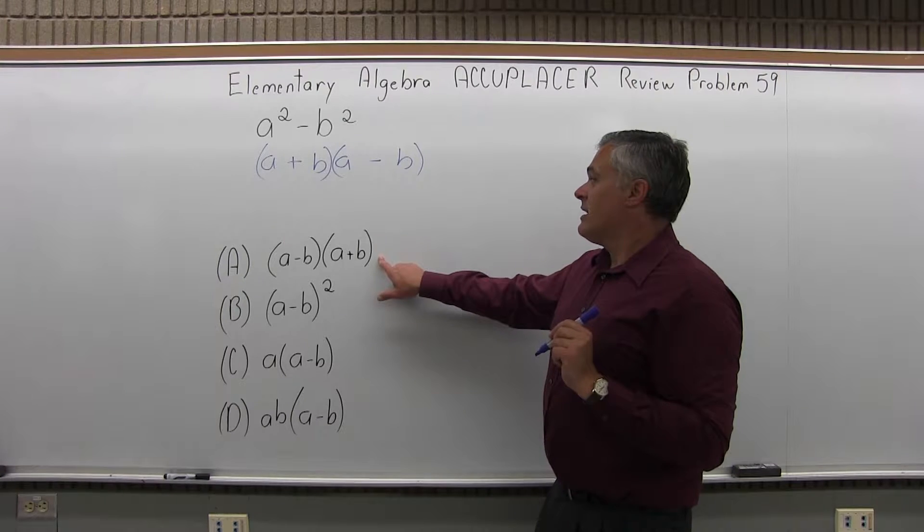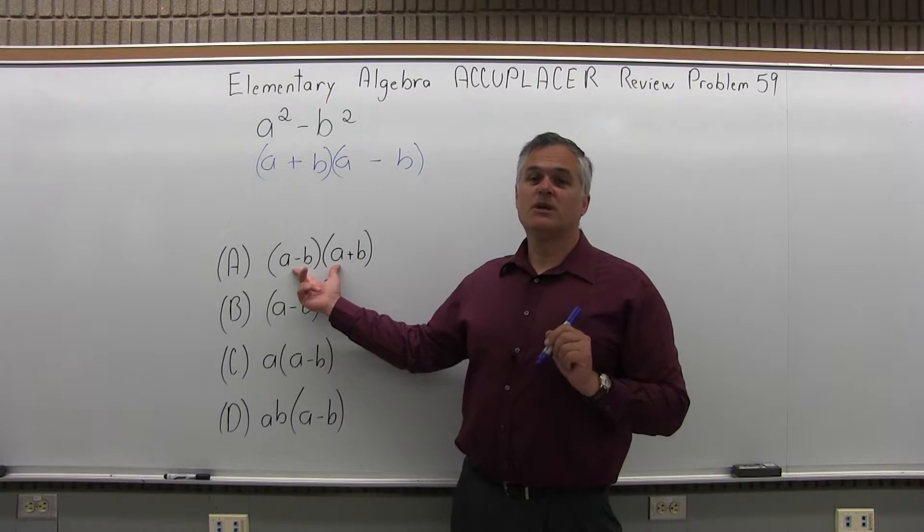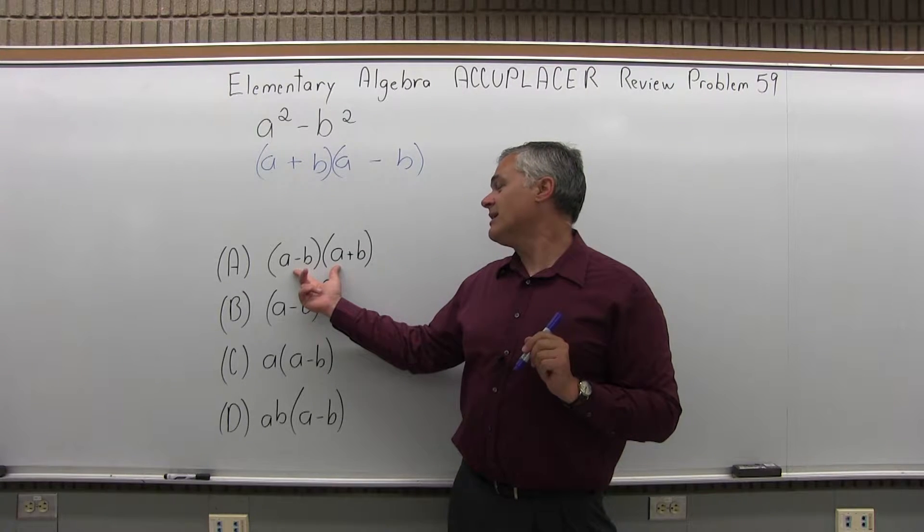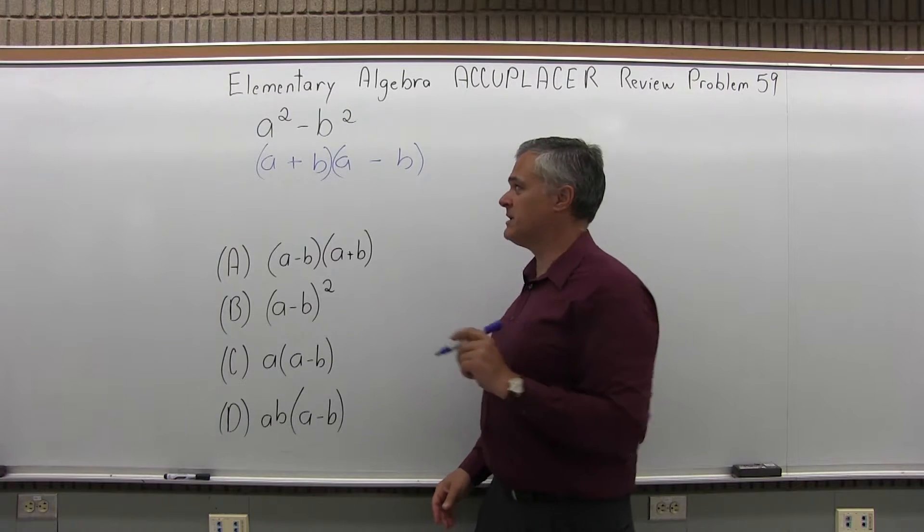And if we look, that's close to option A and it's really the same thing, since the parentheses are being multiplied, you can write them in either order. a minus b times a plus b is the same as a plus b times a minus b.